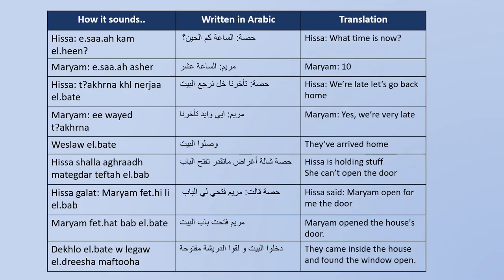Moving on to sentences, there is a conversation between two sisters — Hissa and Maryam. You will hear some of the words we learned earlier. Hissa says 'saa kam alheen' — 'saa' means time, 'kam' means how much, 'alheen' means now, so 'saa kam alheen' means 'what time is it now?' Maryam replies 'is saa asher' — 'asher' means ten, so it's ten o'clock.